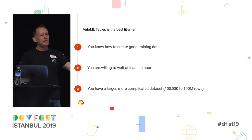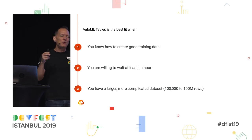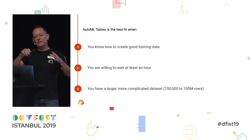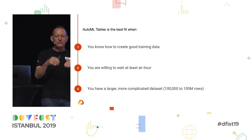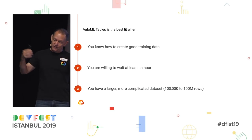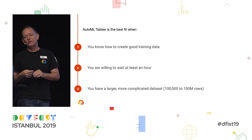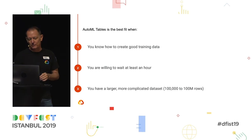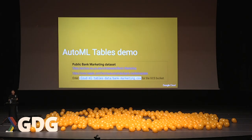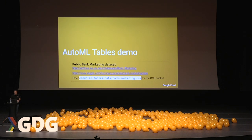AutoML Tables is great if you really want to have at least 100,000 rows of data. We currently have it capped at 100 million rows, though there's no fundamental restriction on that. If you need more than 100 million rows, talk to us and we can probably make that available for you.